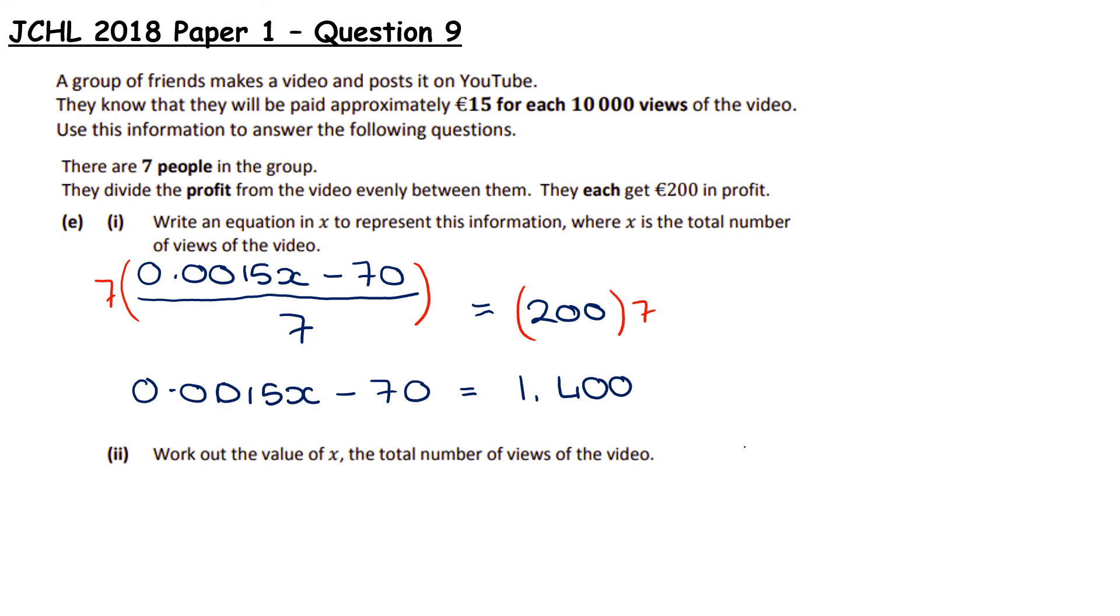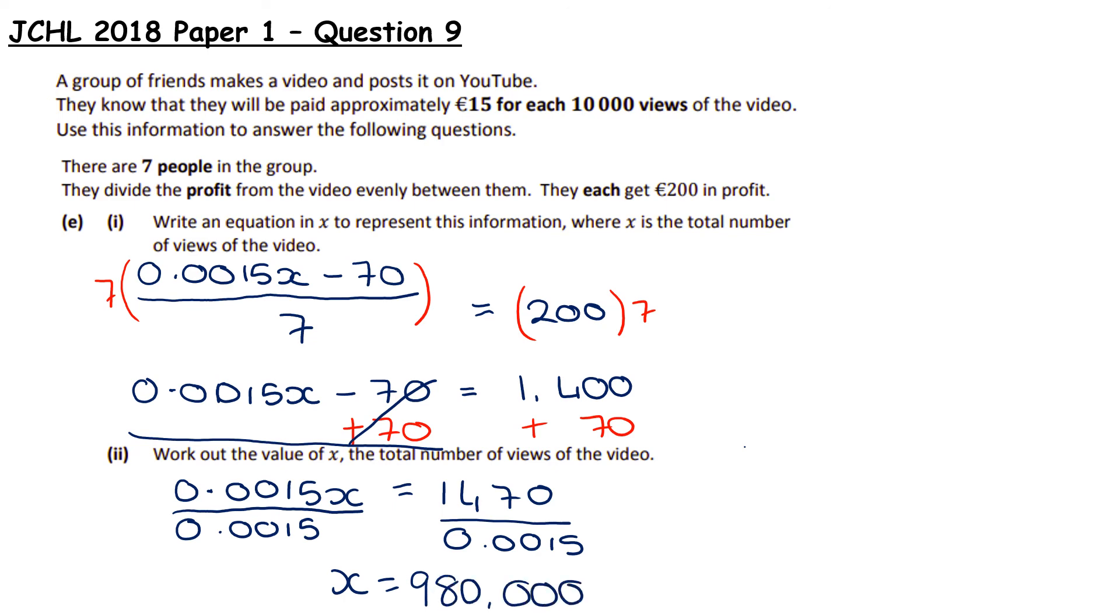It then says work out the value of X, the total number of views of the video. So now we actually want to solve this. To solve this, I'm going to work on it across both places. I'm going to add 70 to both sides. That gives me 0.0015X. These cancel and that equals 1470. Now, this is like any other coefficient of X. We're going to divide both sides by that coefficient. And what we end up with is X equals 980,000 views.